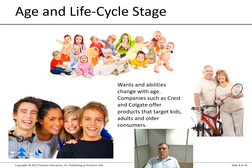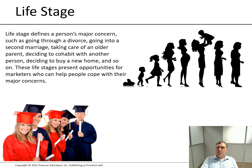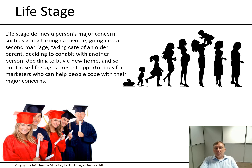In the case of age and lifestyle, wants and abilities change with age. Companies such as Crest and Colgate offer products targeting children, adults and older consumers. The life stage we're at defines what's most important to us — going through a divorce, a second marriage, taking care of an older parent, cohabiting, buying a new home, or studying at university — all of these obviously alter a lot of things in your life.